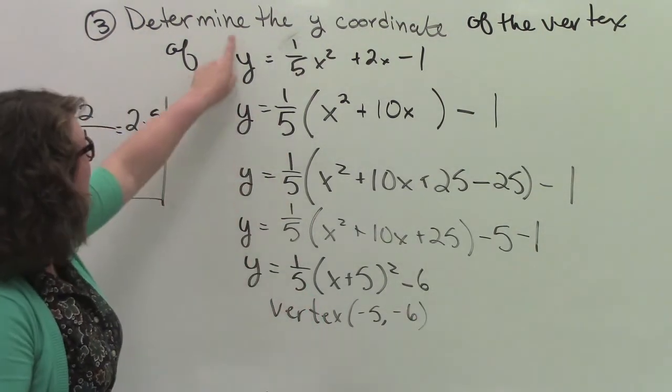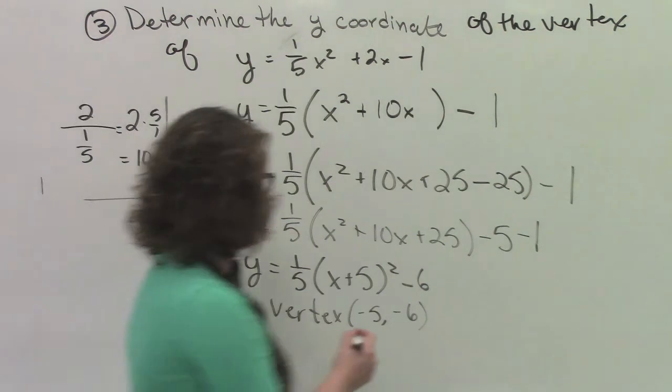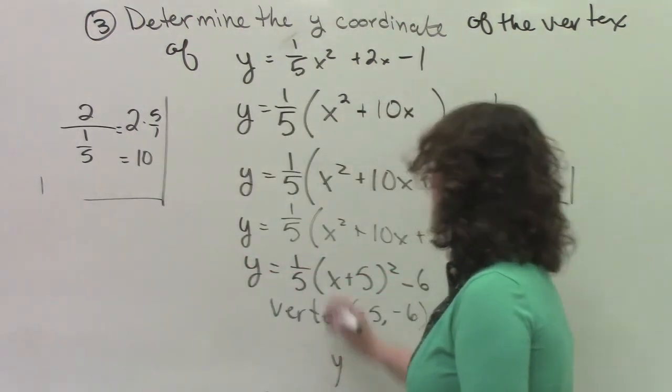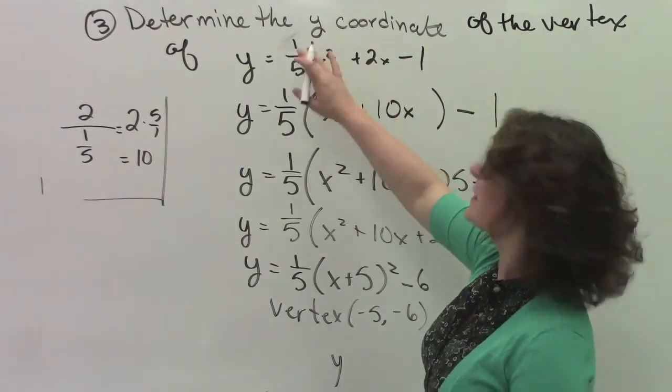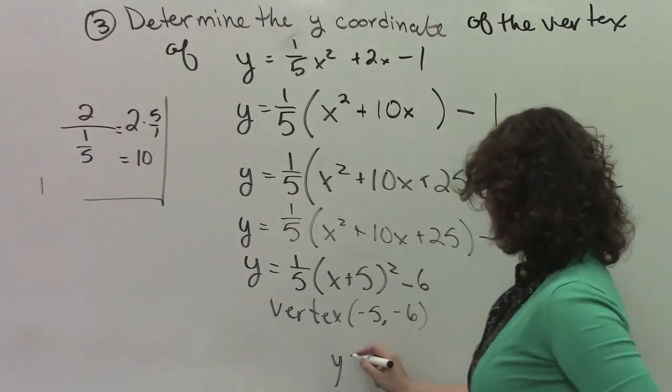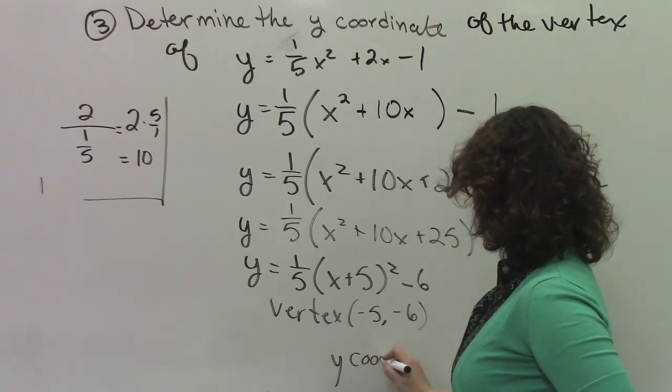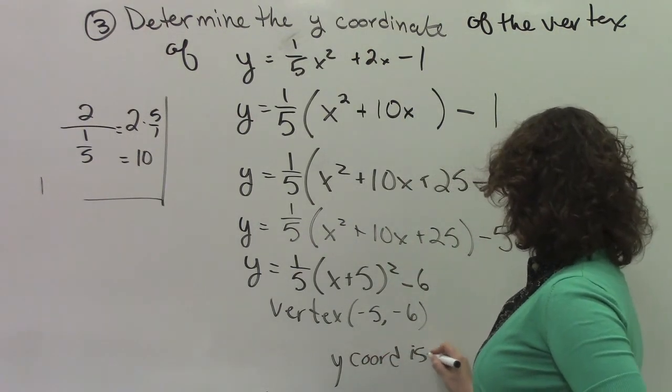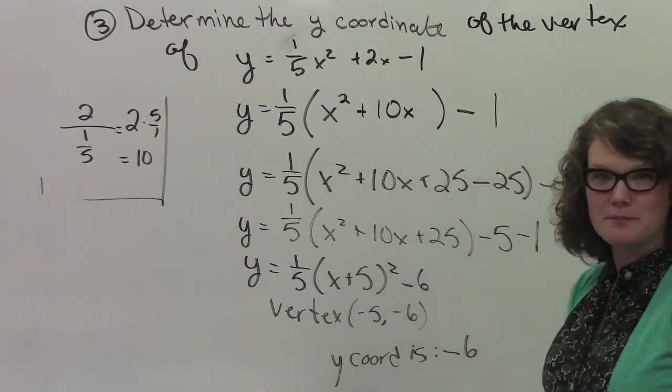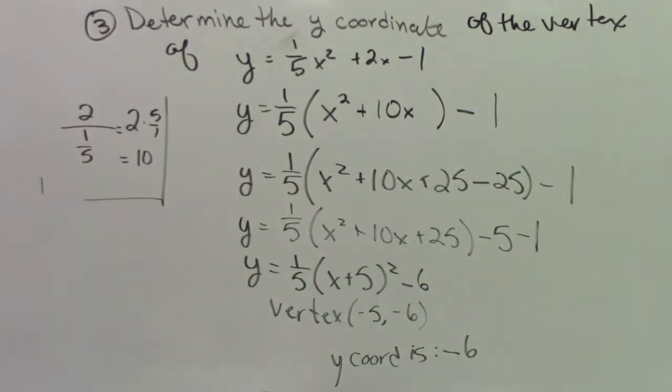So when we look at this, I know that my vertex is negative 5 comma negative 6. So if I'm looking for the y coordinate of the vertex, the y coordinate is negative 6. And we're done.